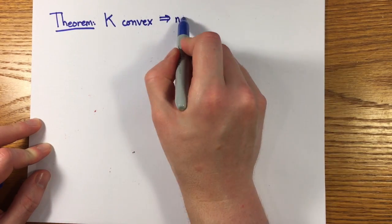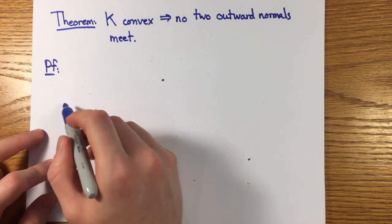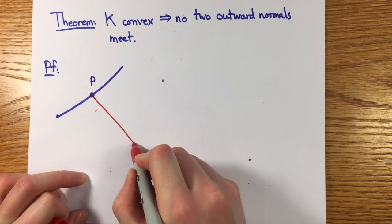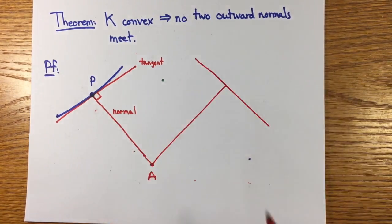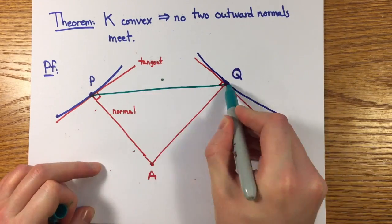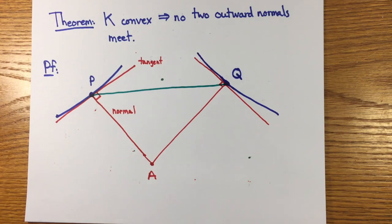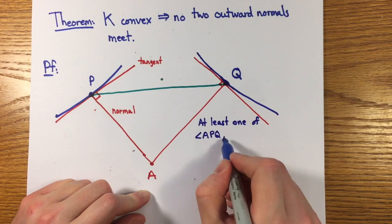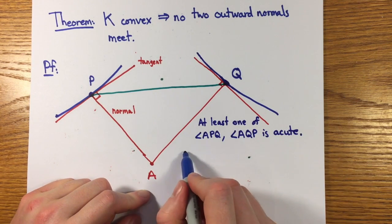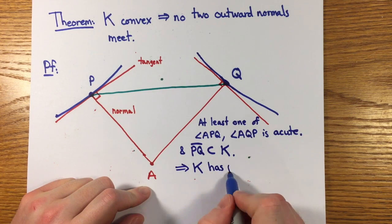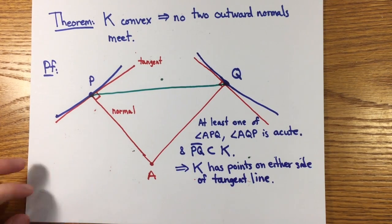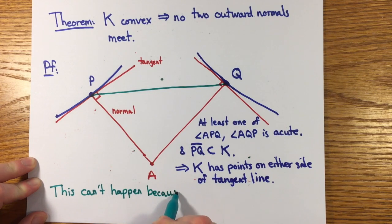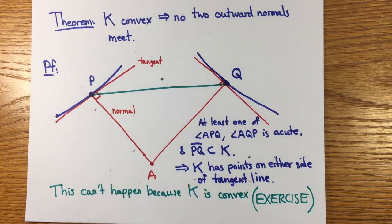If that happened, it would mean that two different exterior normal vectors to the polygon intersected somewhere. But two outer normals to a convex region can never meet. Say p is a point on the boundary of a convex set and pa is normal to the set at p and q is another point on the boundary with qa exterior normal to k at q. A p q forms a triangle, so at least one of the angles a p q and a q p must be acute. And since k is convex, the line from p to q must be in k. But then there are points in k to either side of one of its tangent lines, and this can't happen by the convexity of k. I'll leave this last statement about convex sets lying to one side of their tangent lines as an exercise. I'd love to see a proof in the comments.